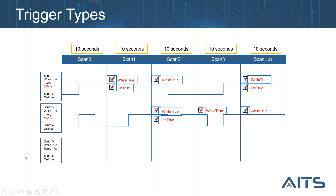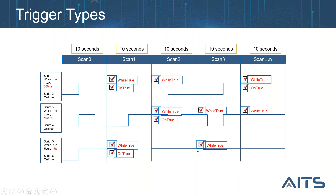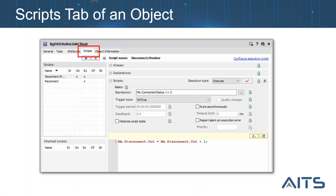The third scenario: WhileTrue with a trigger period of 18 seconds when the scan period is 10 seconds. OnTrue fires normally at the first rising edge. For WhileTrue, after it first becomes true at one scan, the 18-second timer has not yet elapsed at the next 10-second scan, so it is dropped. The script only executes once the 18-second period is reached. Please pay attention to timing when choosing trigger types.